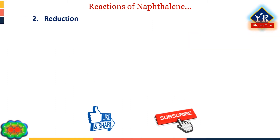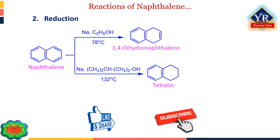Addition of hydrogens is known as a reduction reaction, also called a hydrogenation reaction. Naphthalene undergoes reduction more easily than benzene. The reduction of naphthalene can be achieved by reaction with sodium in boiling ethanol at 78°C, which produces 1,4-dihydronaphthalene.